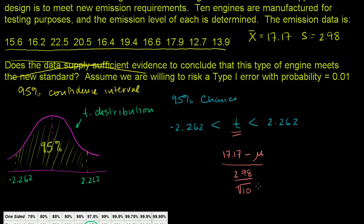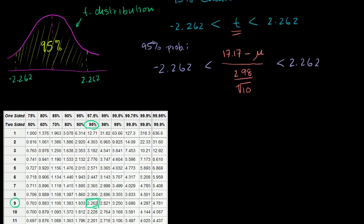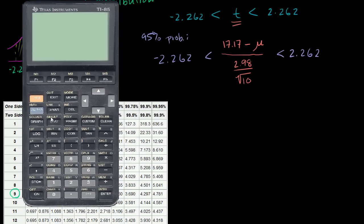So there's a 95% chance that this expression is going to be less than 2.262 and greater than negative 2.262 — the 95% probability still applies to this. Now we just have to do some math. Let me get my calculator out and calculate this denominator: 2.98 divided by the square root of 10, which is 0.9423.